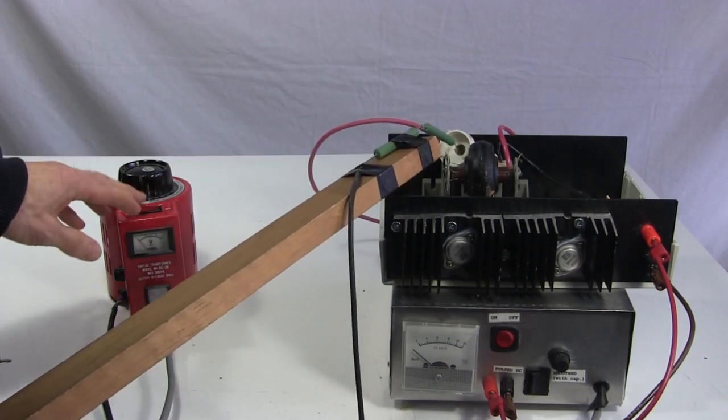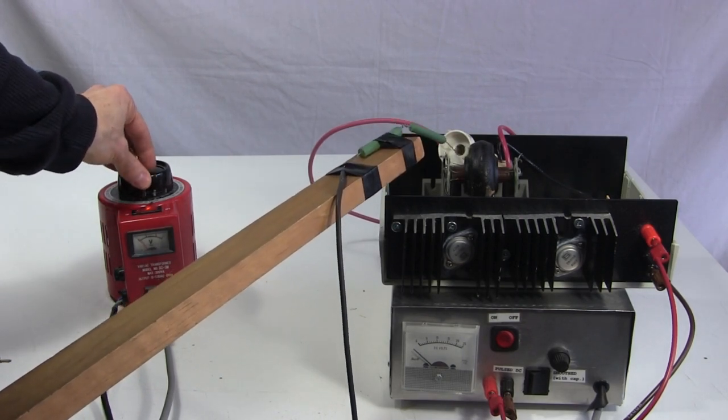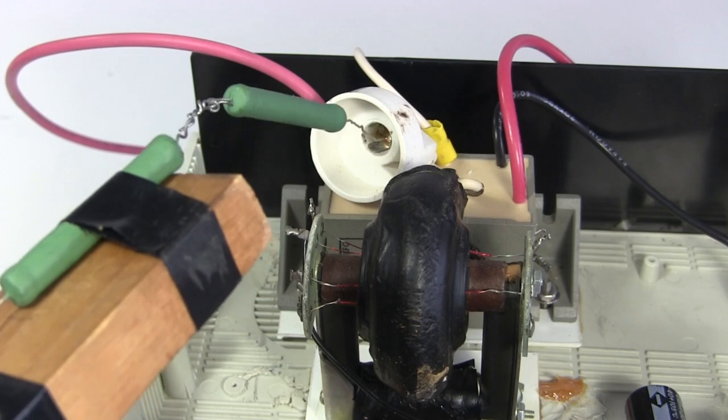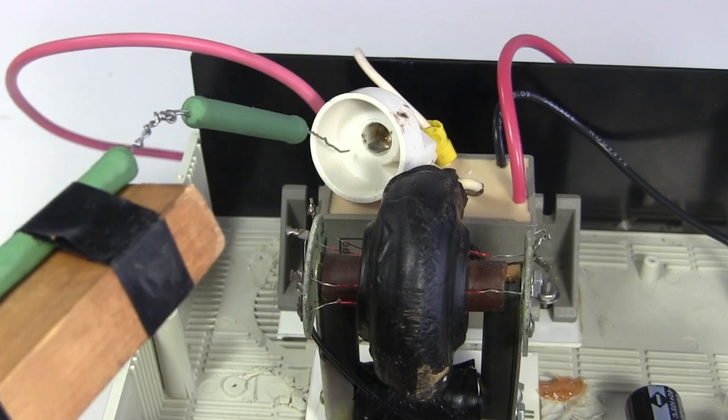I put a grounded wire with some resistors at the flyback's output. I turn on the power supply and turn up the voltage. At some point I should be able to pull the ground wire away and see an arc expanding in the gap between the wire and the output. But I get nothing.